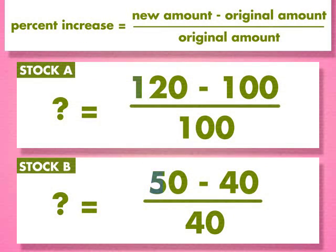For each stock, subtract the new amount from the original amount. Divide that amount by the original amount of money invested in the stock.